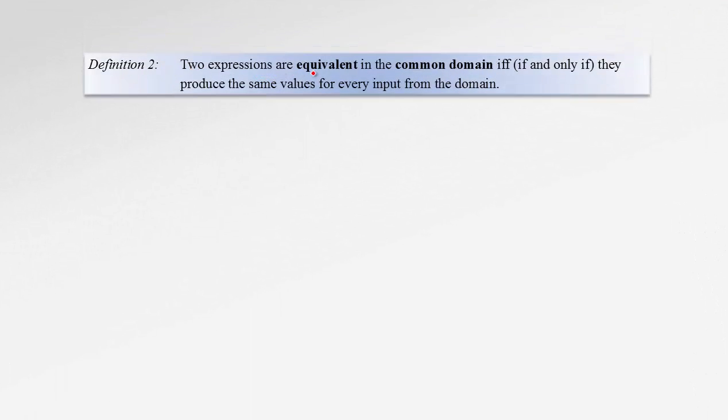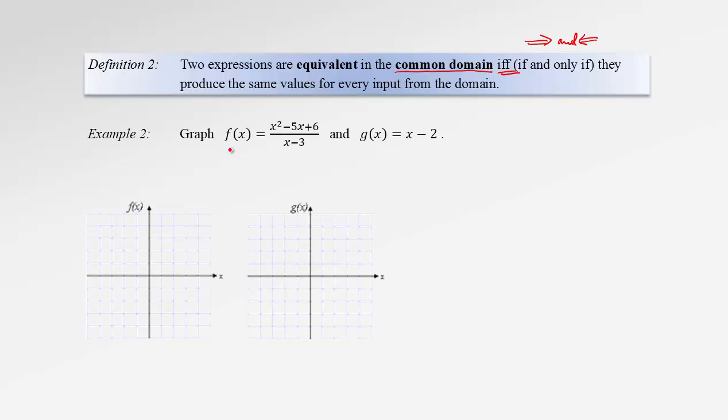Two expressions are said to be equivalent in the common domain if and only if they produce the same values for every input from the domain. This if and only if statement means that if the expressions are equivalent, then they produce the same values. And also, if the two expressions produce the same values, then they are equivalent. So the implication goes both ways. This way and that way. That's what if and only if stands for.